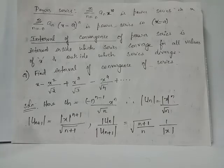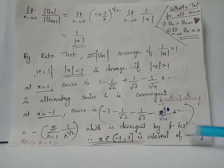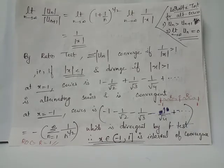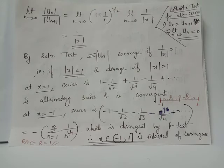For the power series x minus x squared over root 2 plus x cubed over root 3 minus x raised to 4 over root 4 plus etc., we evaluated the radius of convergence as R equals 1. The interval of convergence for this power series is x belongs to the open-closed interval (−1, 1]. Considering this interval from minus 1 to 1, with 0 as center, the radius of convergence R is the distance from the center to either endpoint — from 0 to minus 1 or from 0 to positive 1 — giving R equals 1.